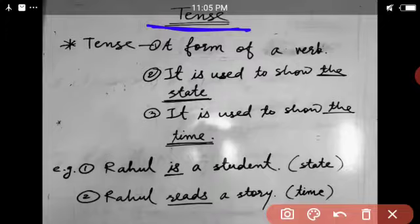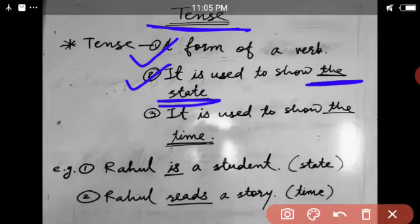Tense is a form of a verb. Whatever tenses are there, they are related to the forms of verb. Next, it is used to show the state. What is state?